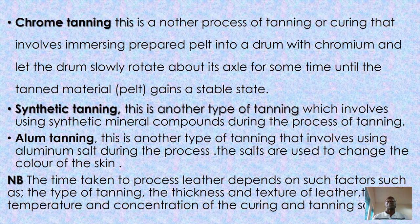Chrome tanning is another process of tanning hide or skin, which involves immersing the prepared pelts into a drum of chromium and letting the drum slowly rotate about its axle for some time until the pelt gains a stable state. It is done slowly, rotating in the drum, and that helps to stabilize the material. It is one of the methods of tanning or curing.